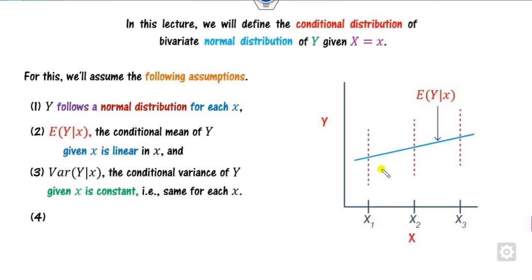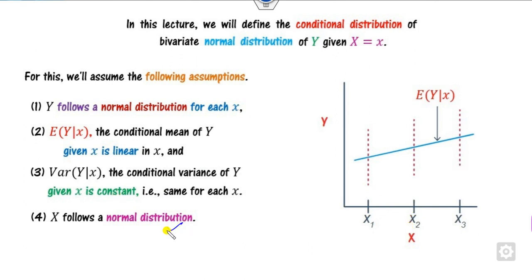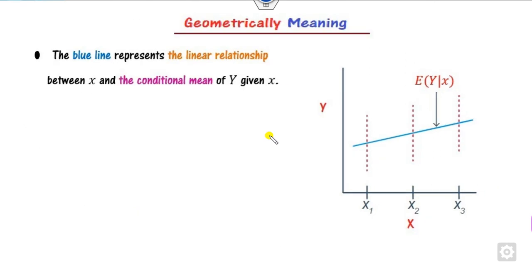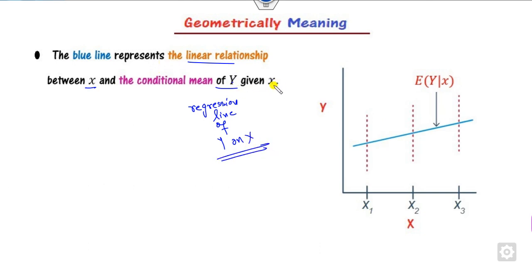Graphically, for a corresponding value of x there is some variation — that is the variance, or dispersion, which is the range. The blue line represents the linear relationship between x and the conditional mean of y — this is nothing but the regression line of y on x. If you are talking about x given y, it will be represented as the regression line of x on y.